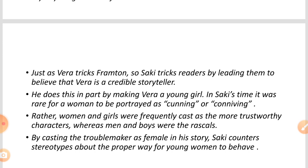Just as Vera tricks Frampton, so Saki tricks readers by leading them to believe that Vera is a credible storyteller. Vera is a naughty girl who plays with the newcomer who comes to stay there. Similarly, the writer H.H. Monroe also plays tricks on his readers, making them believe that Vera is a credible storyteller.